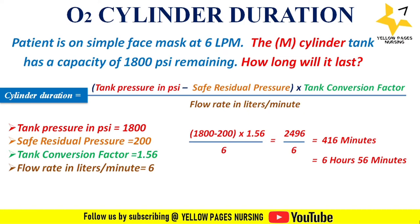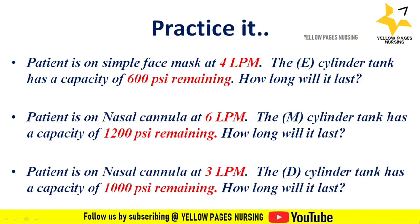Here are a few examples for your practice — you can mention the answers in the comment box. First: a patient is on a simple face mask at 4 liters per minute; the E-cylinder tank has 1200 PSI remaining. Second: nasal cannula at 6 liters per minute; M-cylinder with 1200 PSI remaining. Third: nasal cannula at 3 liters per minute; D-cylinder with 1000 PSI remaining.